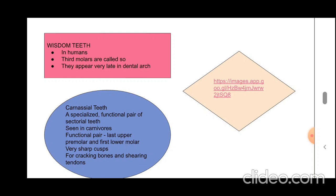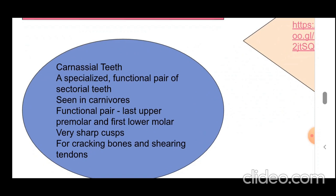Another modification is carnassial teeth — a specialized functional pair of sectorial teeth seen in carnivores. This functional pair includes the last upper premolar and the first lower molar. These teeth have very sharp cusps and are used for cracking bones as well as shearing tendons.